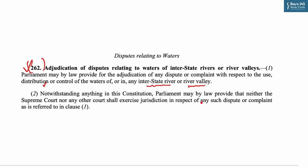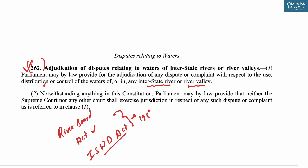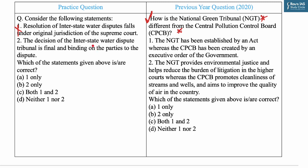Under this provision, Parliament enacted two laws: the River Boards Act and the Interstate Water Disputes Act, both in 1956. Under the Interstate Water Disputes Act 1956, Parliament excluded interstate water disputes from the purview of the original jurisdiction of the Supreme Court. Statement two says the decision of the Interstate Water Dispute Tribunal is final and binding on the parties — this is correct under the same act. So the correct statement is two only — answer B.